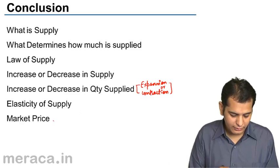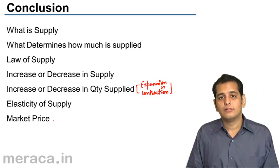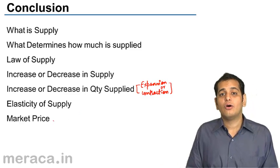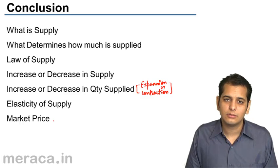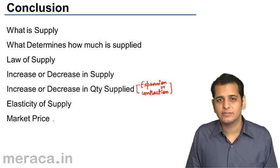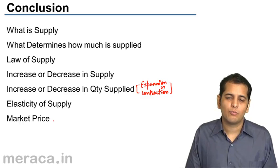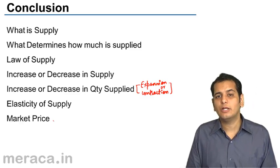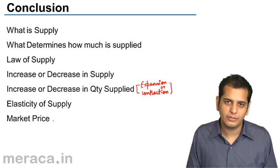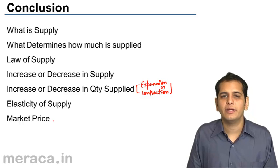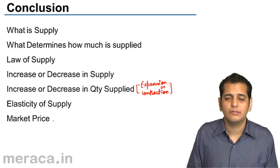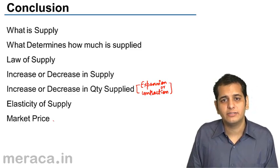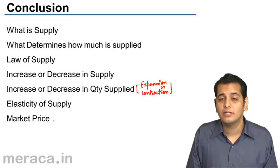Finally, we saw what is market price — how does a price get set in the market, and what is the equilibrium price in the market? It is the price where demand and supply meet, where demand and supply are equal.